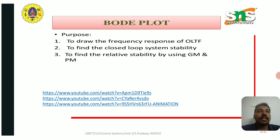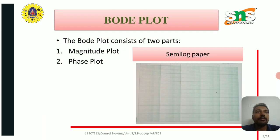The phase crossover is the point at which the phase plot crosses −180°. The purpose of the Bode plot is to draw the frequency response of an open-loop transfer function (OLTF) and to find the closed loop system stability. It is also used to find the relative stability by using gain margin and phase margin.